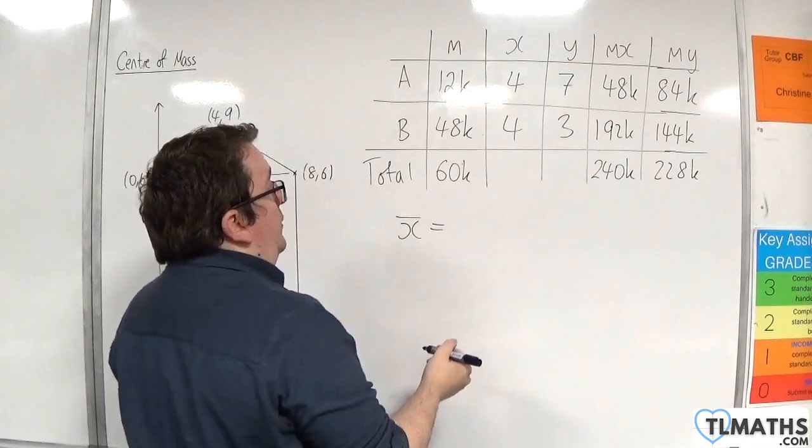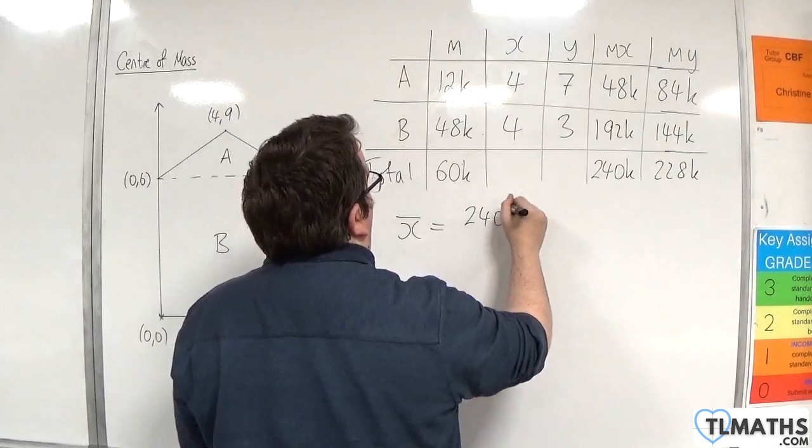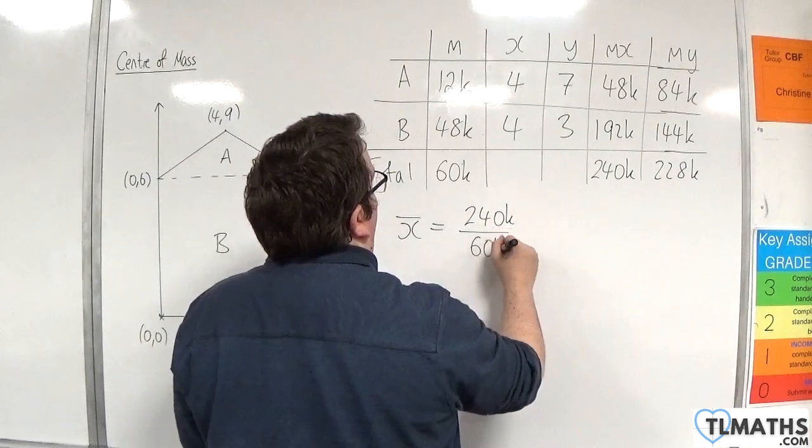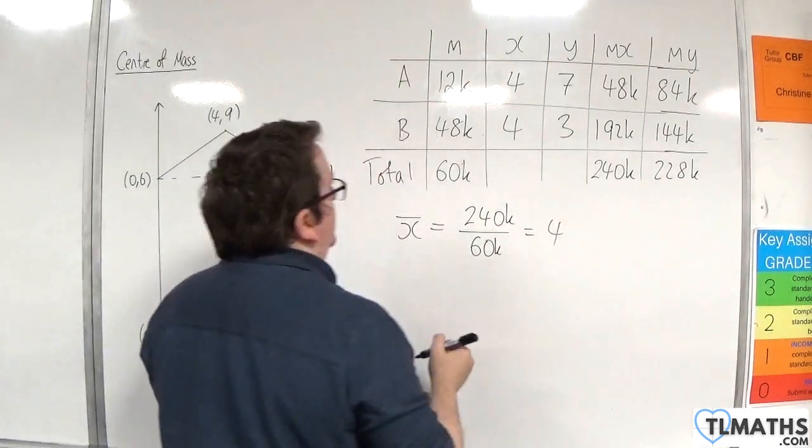So, the average of the x's had better be 4. It's 240k over 60k, which is 4, excellent, as expected.